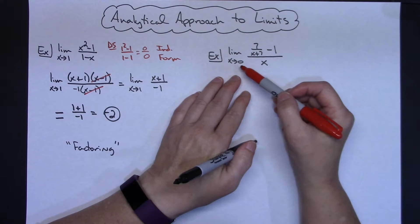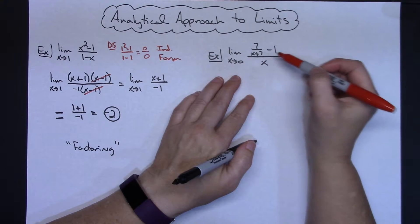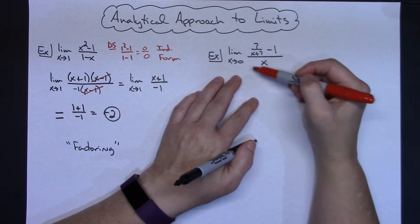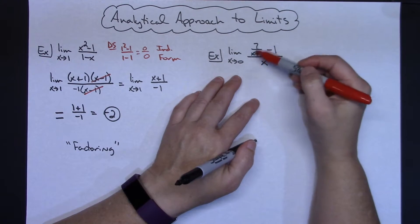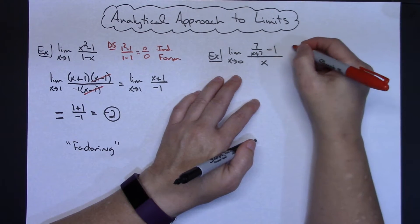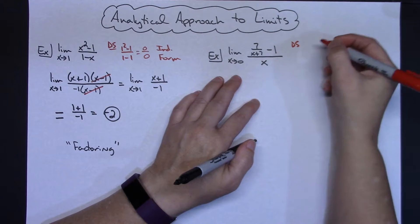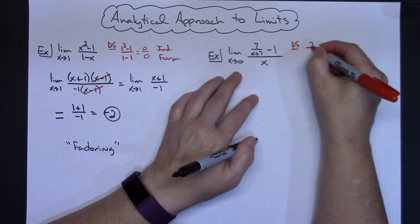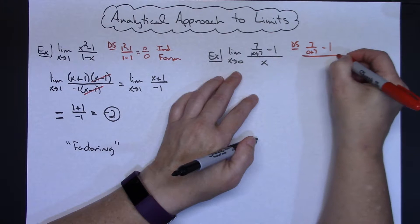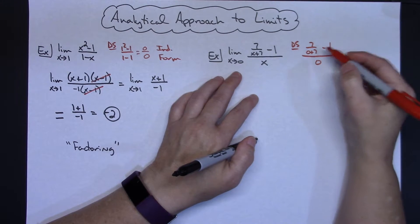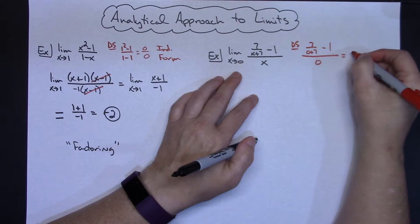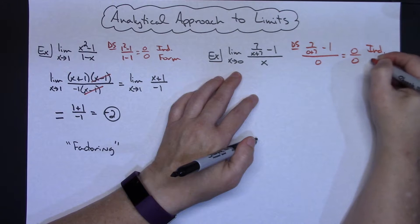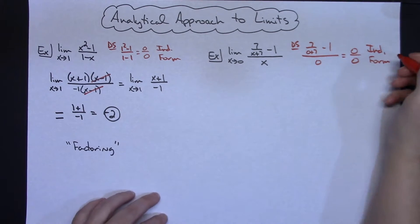In the second example, I've got the limit as x approaches 0 of 7 over x plus 7 minus 1, all over x. Right off the bat I can see this is a complex fraction. Doing direct substitution — plugging 0 in for x — gives 7 over 7 minus 1, which is 1 minus 1, giving 0 over 0. That's again the indeterminate form, which tells us there's more work we can do.